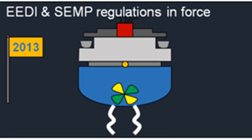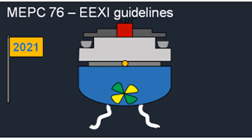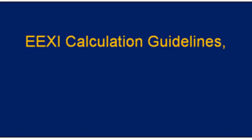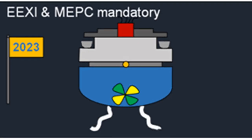IMO started considering technical and operational measures to improve ship energy efficiency early in 2000. Shipping was one of the first international industries to step forward toward reduction of CO2 emissions. The relevant regulations of Annex VI were adopted in 2011, and on 1st January 2013 the regulations on EEDI and SEEMP came into force. The EEXI guidelines were adopted at MEPC 76 in June 2021, covering EEXI calculation guidelines, EEXI survey and certification guidelines, and shaft engine power limitation guidelines.